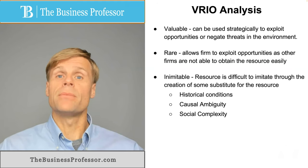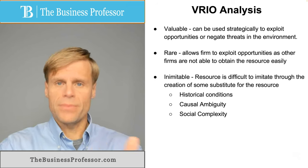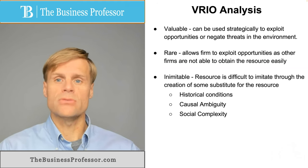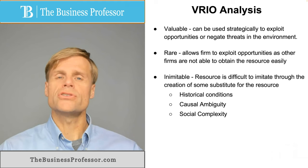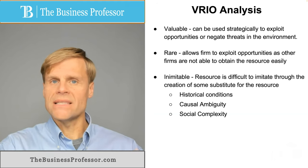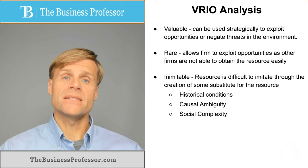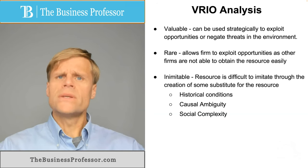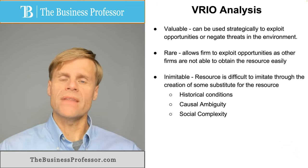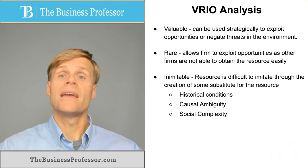There are several types of inimitability. First, historical conditions — it takes a long time or specific historical events to give rise to the resource, making it very difficult to copy, such as precious metals. Second, causal ambiguity — it's difficult for others to identify which resource is creating the advantage, so if they can't pinpoint it, they can't copy it. Third, social complexity — the resource or capability is generated through the internal environment: the culture, interactions, and networks of the organization, which tend to be very unique and thus very difficult to imitate.